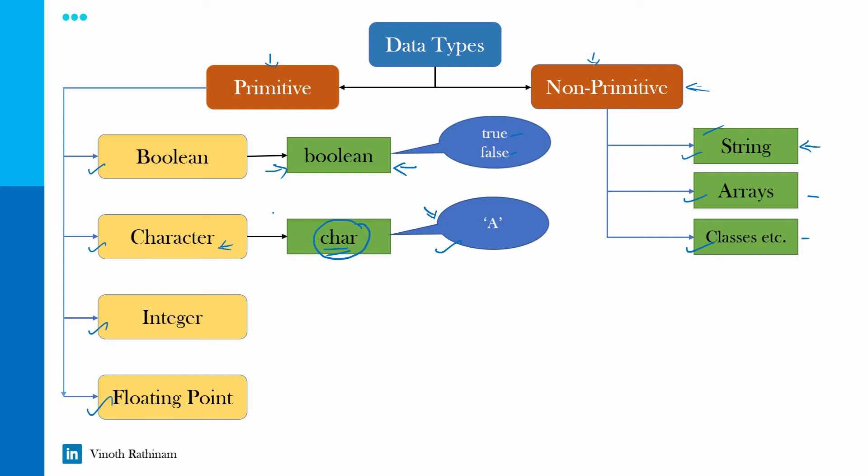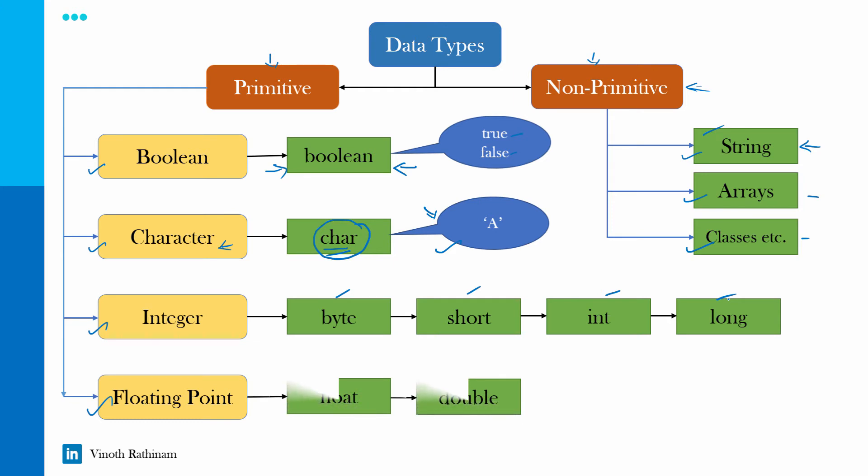Then comes the integer. For integer we have four types: byte, short, int and long. We will see that in depth in next slide. Then followed by floating point, float and double.